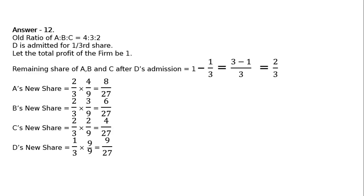Then D's new share, 1 upon 3 multiplied by 9, that is 9 upon 27. Therefore, the new ratio of A:B:C:D is equal to 8:6:4:9.